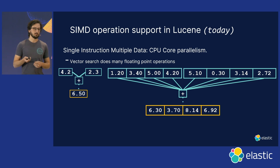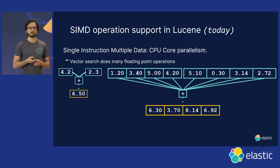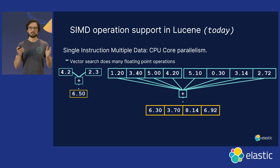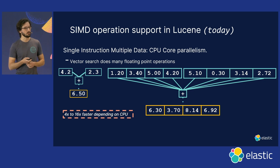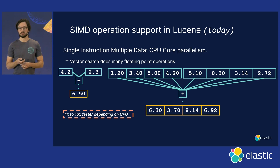With SIMD, you get true parallelism inside of the CPU core and can do as many as four, eight, or 16 operations at a given time. This works not just for floating point but also for byte, integer, and short values. Micro benchmarks show this is four to 16 times faster, and in Elasticsearch it's over two times faster depending on your CPU architecture. We natively introduced this to Lucene so it is tightly integrated in our stack and you get it right out of the box.